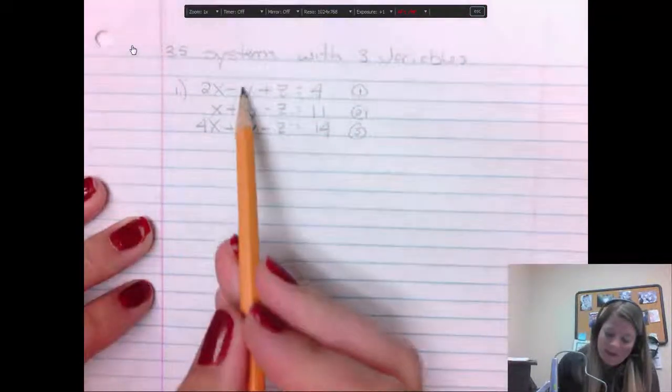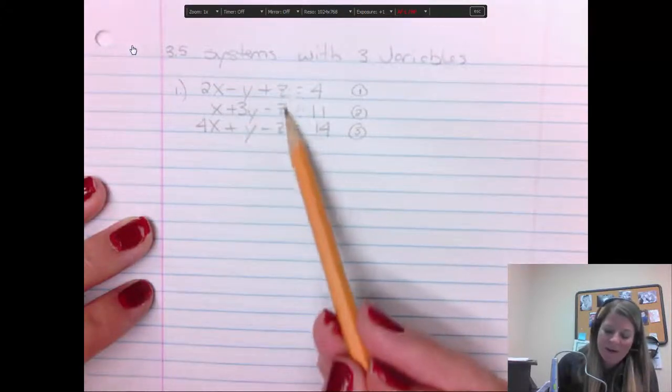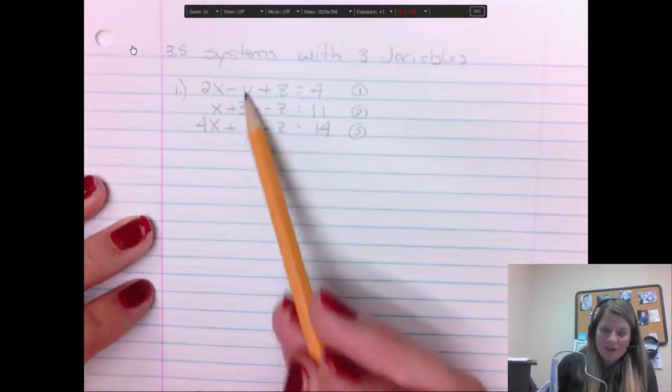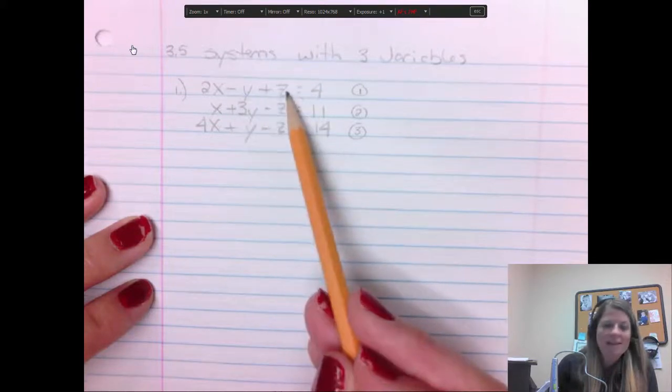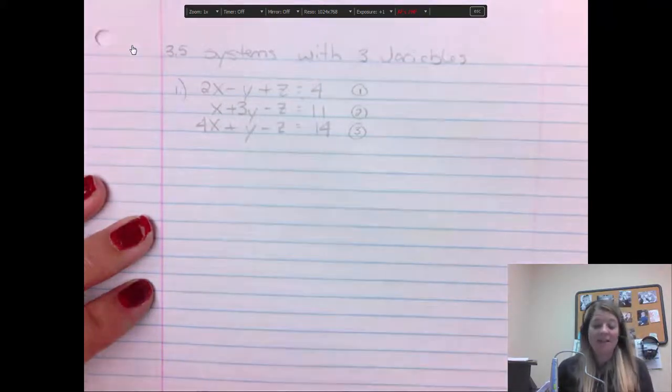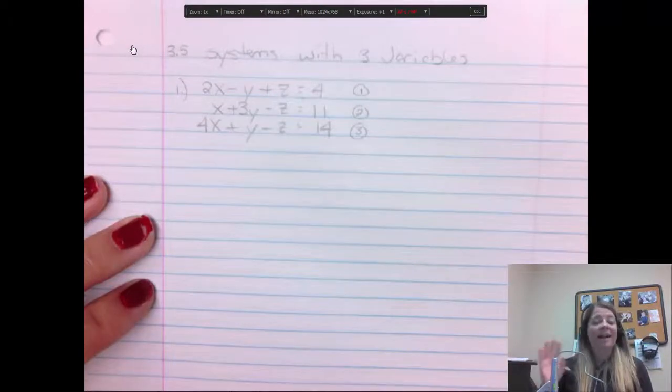I have to pair two together and two together and eliminate a letter. So basically I need to eliminate the same letter in both two sets. So I am going to pair, let's call this equation one, two, and three. I'm going to start with pairing one and two, and look how easy it is to pair those two and get rid of z.